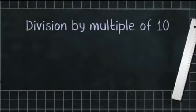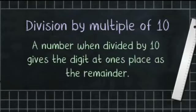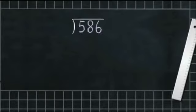Dear students, today we will learn division by multiples of 10. A number when divided by 10 gives the digit at the ones place as the remainder. Example: 586 divided by 10. Here we will take the first two digits of the dividend.